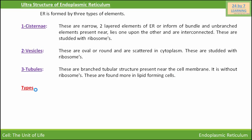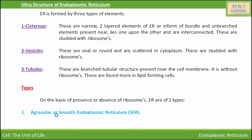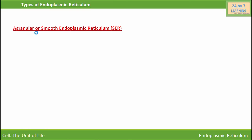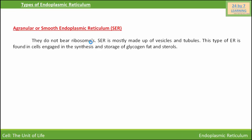Next, we are going to discuss the types of endoplasmic reticulum. On the basis of presence or absence of ribosomes, endoplasmic reticulum is of two types. Number one is agranular, or smooth endoplasmic reticulum. The second is granular, or rough endoplasmic reticulum. Smooth endoplasmic reticulum does not bear ribosomes and is mostly made up of vesicles and tubules. This type of endoplasmic reticulum is found in cells engaged in synthesis and storage of glycogen, fat, and sterols.